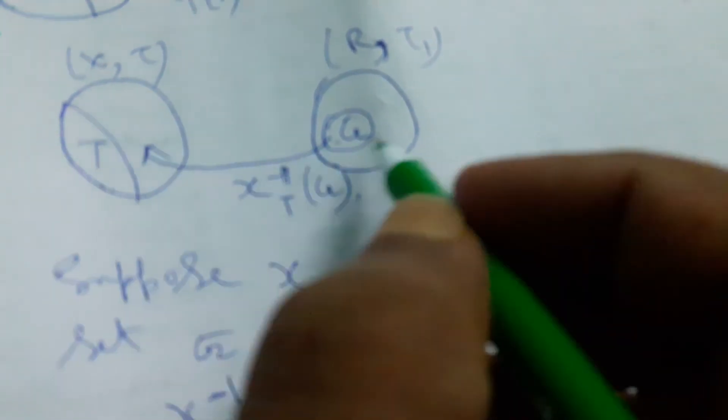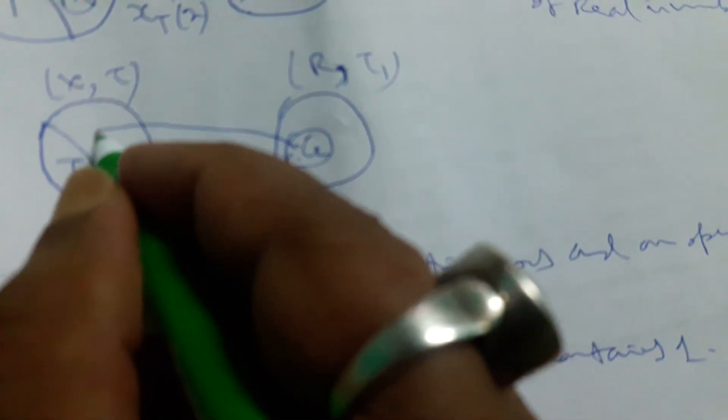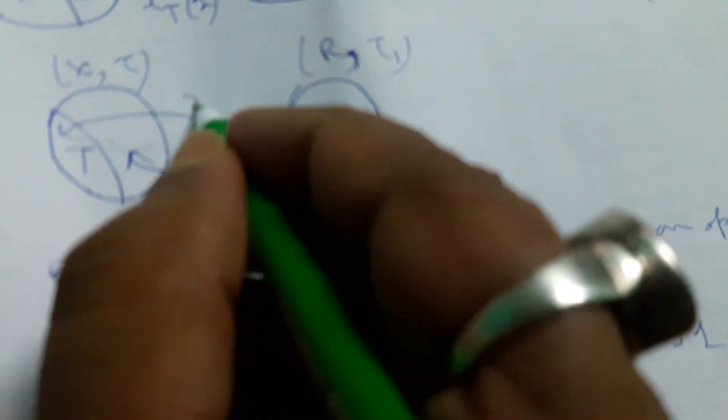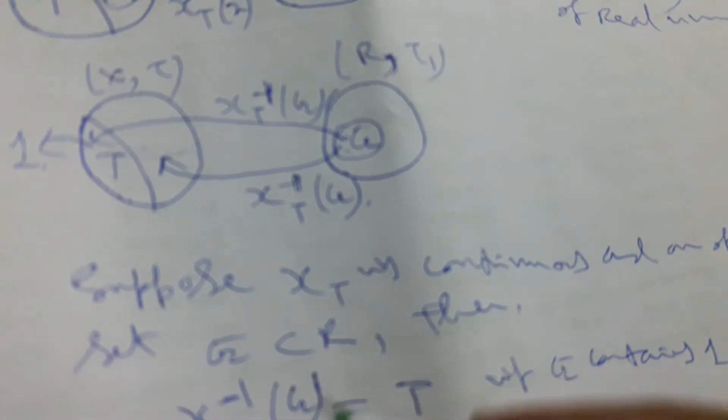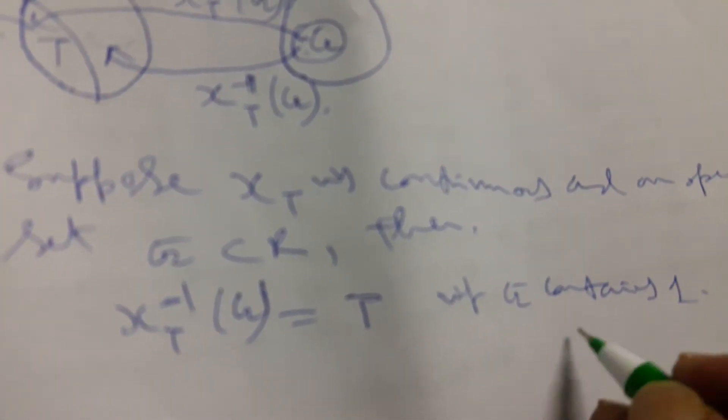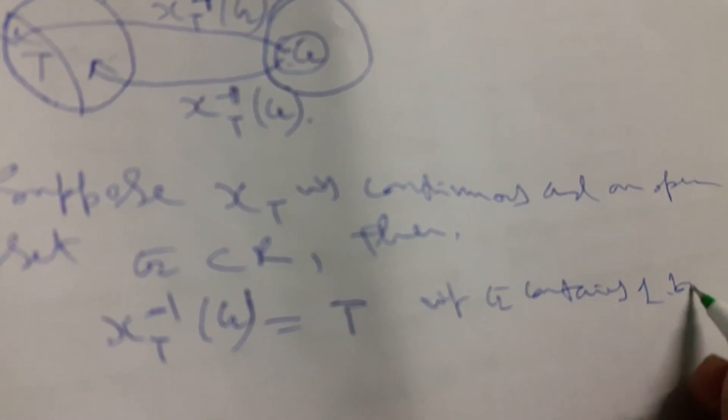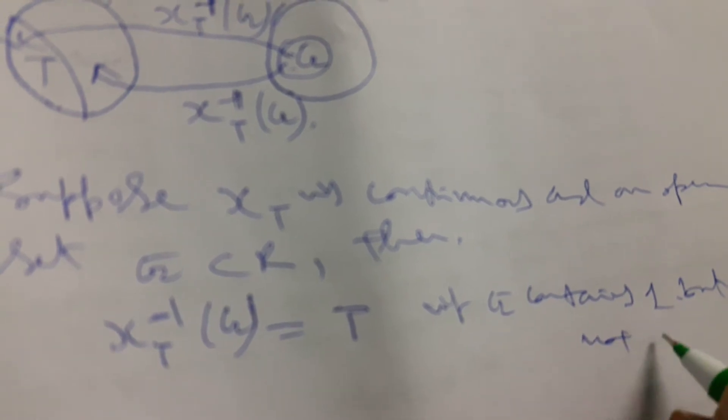And this χ_T^(-1)(G), parallel to this variable open set if we consider, and this parallel concept, here if we find χ_T^(-1)(G), here also we find χ_T^(-1)(G), but the result will be T when G contains 1 but not 0.